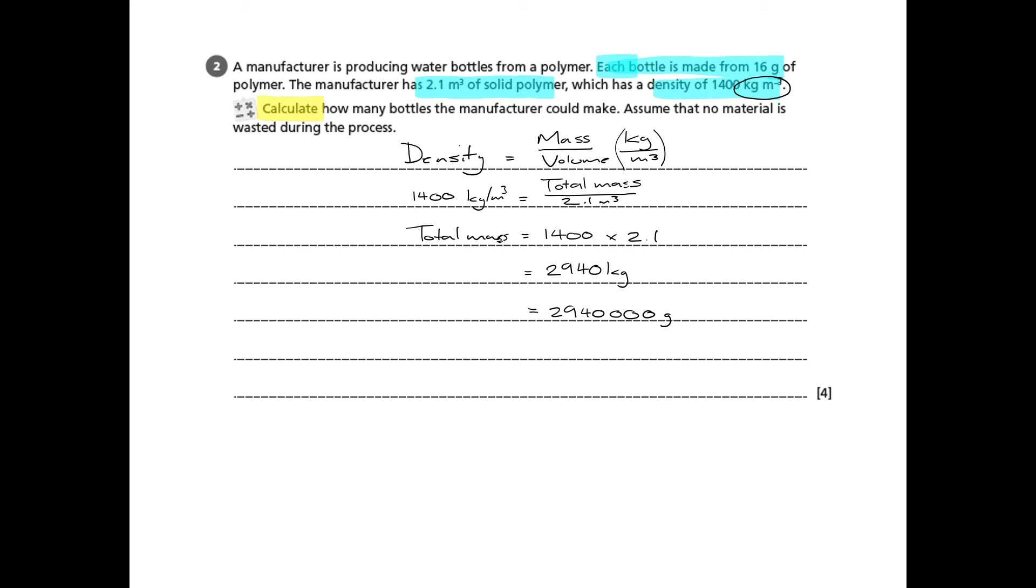Now we're ready for the second half of the equation or the second half of the problem. We know that the number of bottles is going to be the total mass divided by the mass for each bottle. Plug in the figures from above and we get 294,000 divided by 16.